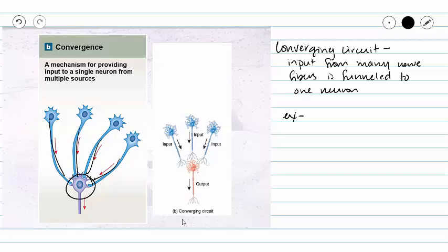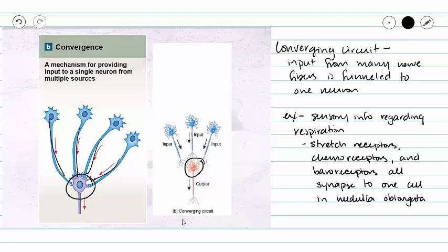And that sensory info could be something like respiration. We've got stretch information, chemoreceptive information, and baroreceptive information coming into our medulla oblongata, and we have one cell making a decision. This one cell can then make a decision about what should occur regarding respiration.